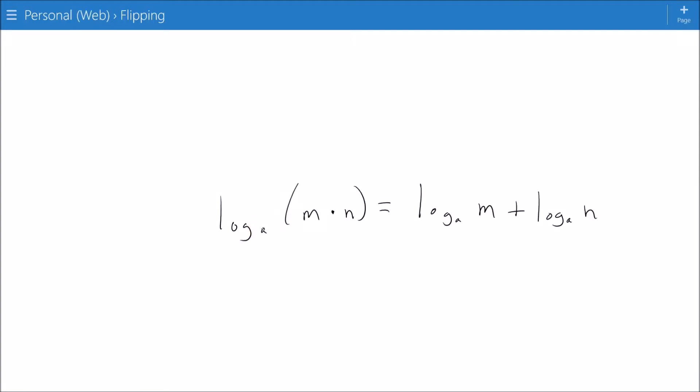Hello, today some rules for logarithms. So if I have the log base a of a quantity m times n, I can break that up into these two things over here, and I change from multiplication, noted by the dot right there, to addition.